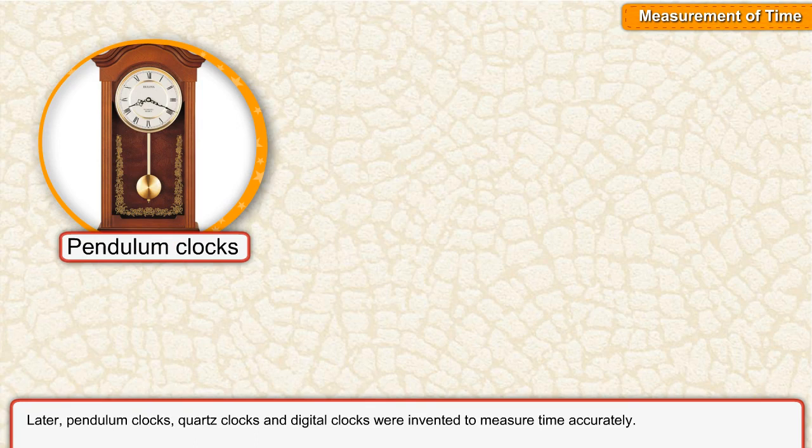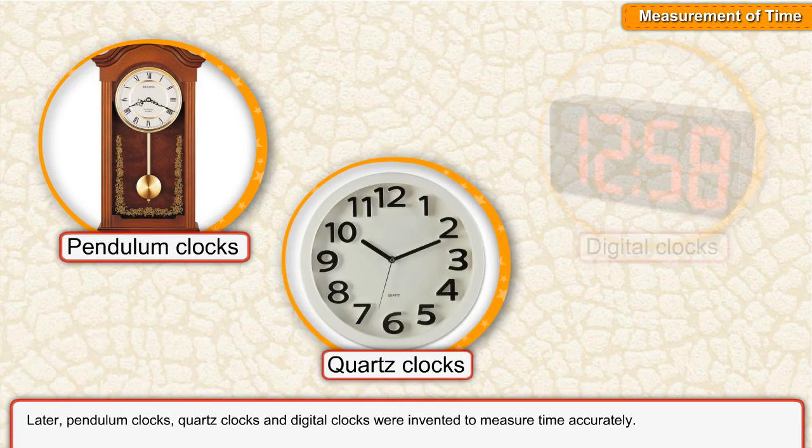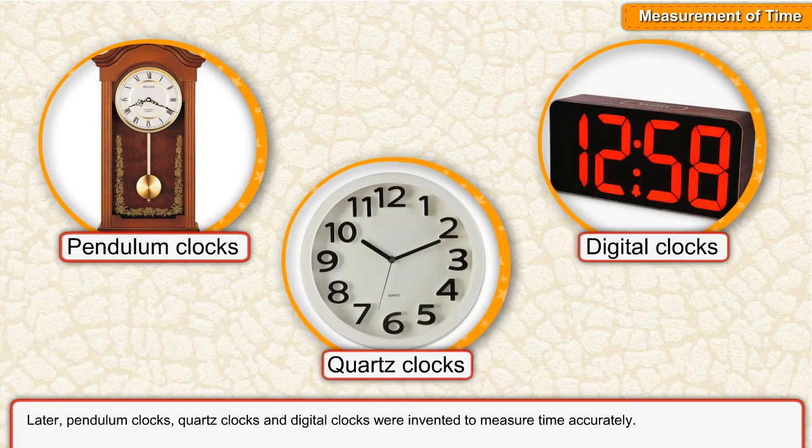Later, pendulum clocks, quartz clocks, and digital clocks were invented to measure time accurately.